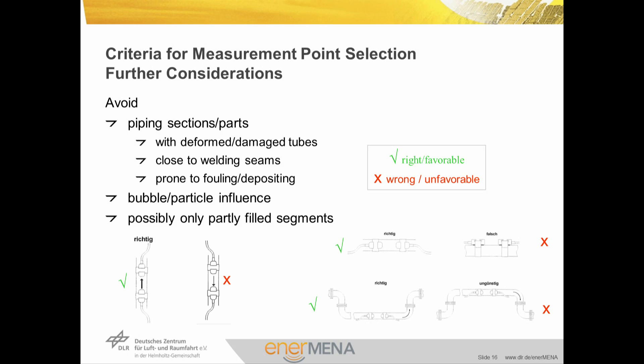Further considerations apply to the selection of the measurement point in general. For reasons of signal quality and deviations in material or geometry, piping sections with deformed or damaged tubes and areas close to welding seams should be avoided. Likewise, parts prone to fouling or deposition are unfavorable because of the reduction of the effective aperture and varying wall properties. Bubbles or particles reduce the signal quality and the effective flow rate of the actual medium.